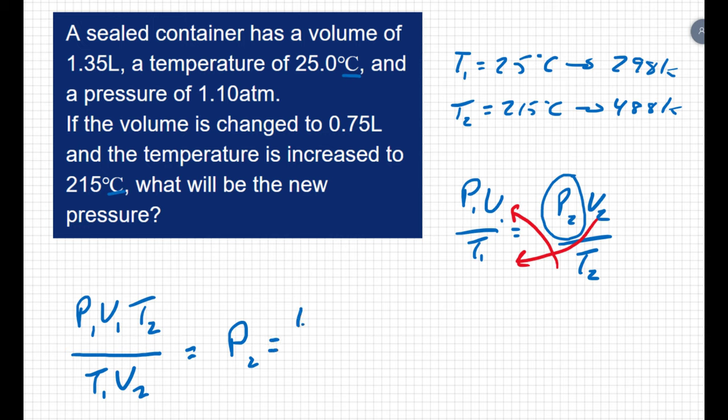My initial pressure is 1.1 atmospheres. My initial volume is 1.35 liters. And we converted our final temperature, T2, to 488 Kelvin. I'm going to divide that whole thing by my initial temperature, which is 298 Kelvin, times my final volume, which is 0.75 liters.